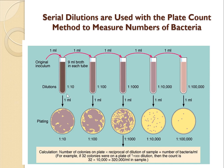Each test tube contains 9 ml of nutrient broth. One ml of inoculum is transferred into the first test tube, making it 10 ml. Then one ml of sample from the first test tube is transferred into the second test tube containing 9 ml of nutrient broth, again making 10 ml. This process continues for subsequent test tubes, and then one ml of sample from each test tube is transferred to a petri plate.